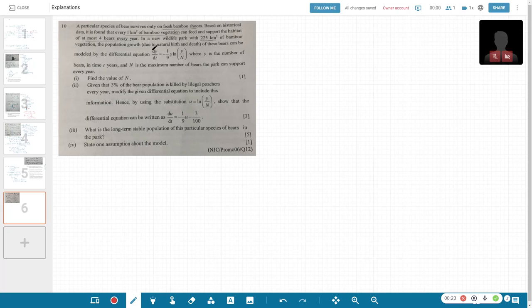The population growth due to natural birth and death can be given by this DE. N is the maximum number of bears the park can support, so find the value of N. Part 1 is pretty straightforward. We are just going to get 225 multiplied by 4 bears because that is the maximum it can support, so that will be 900 bears. N equals 900.